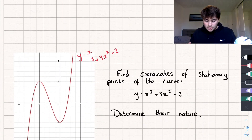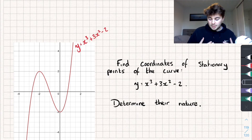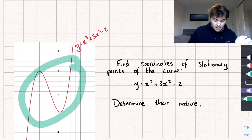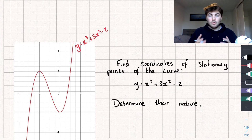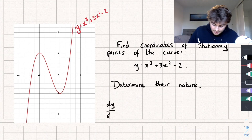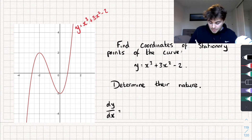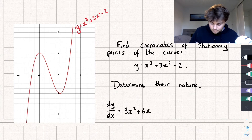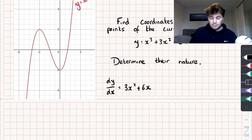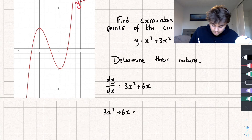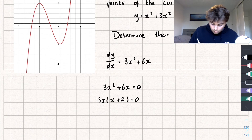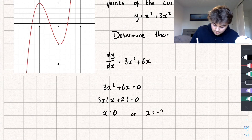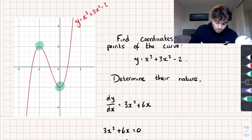This makes a lot more sense if we take a look at an example. We have: find the coordinates of the stationary points of the curve y equals x³ + 3x² − 2, and determine their nature. The first thing we're going to do is find the derivative. dy/dx equals 3x² + 6x. To find where the gradient equals zero we set 3x² + 6x = 0. We can factorize out 3x to get 3x(x + 2) = 0, and therefore x = 0 or x = −2. You can check by looking at the sketch that those are where the stationary points are.